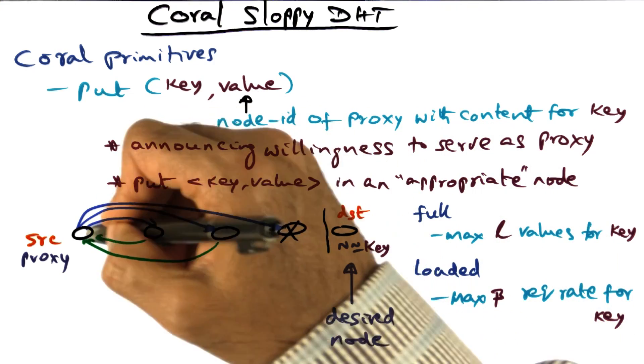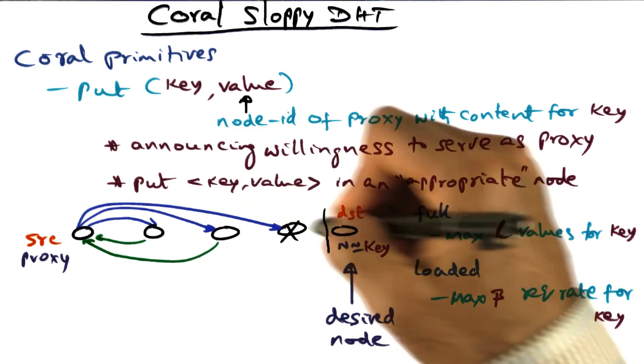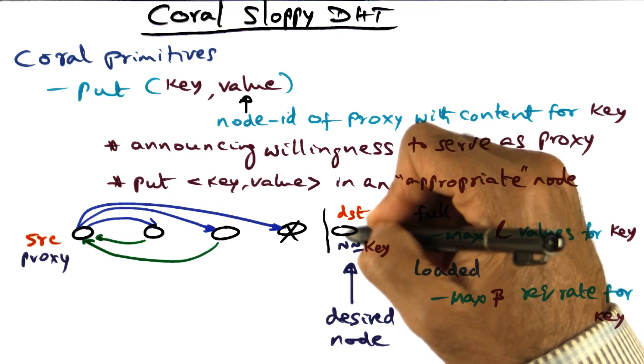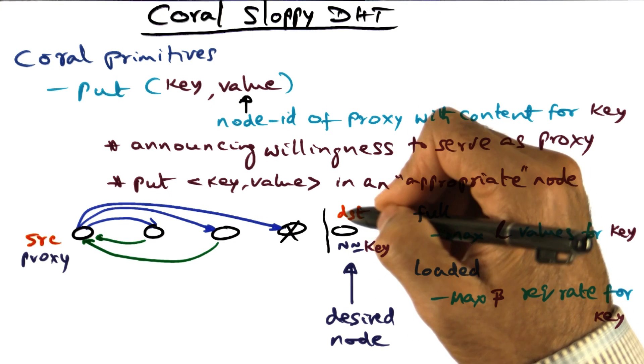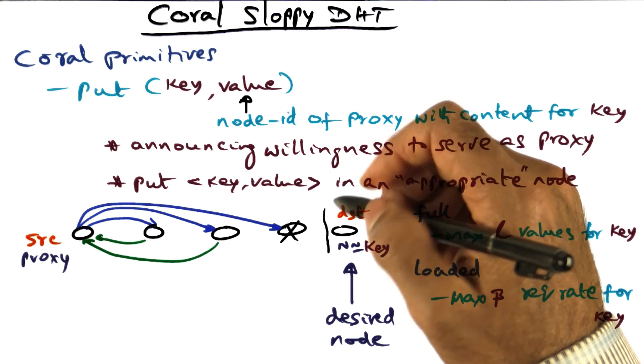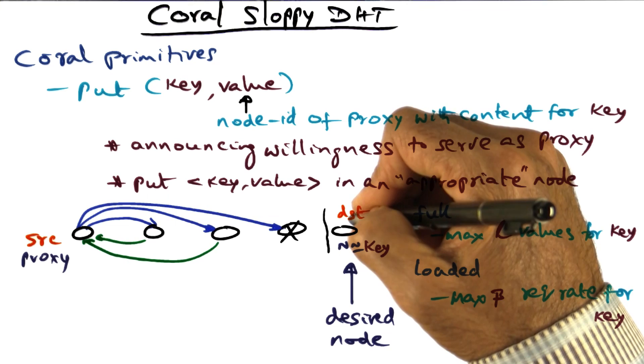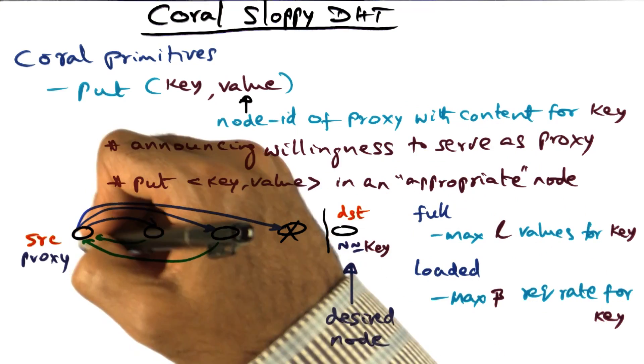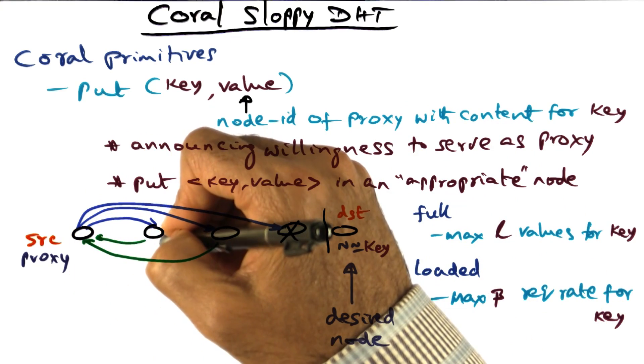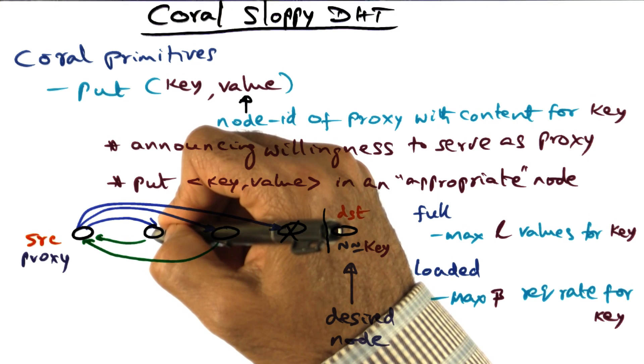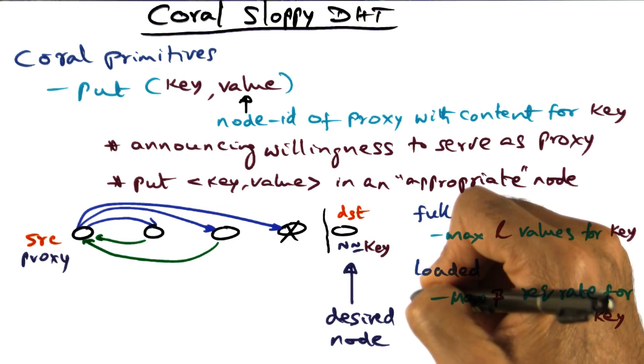And as I'm going, making these calls, I'm progressing towards this desired destination node using that key-based routing algorithm that uses the XOR distance between the source and the destination, halving the distance at every step. What I'm going to ask is, are you loaded or full? These two states that we talked about.